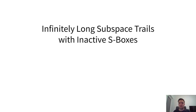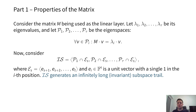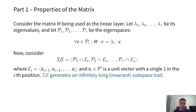What are infinitely long subspace trails with inactive S-boxes? We focus on the properties of the linear layer. If we have a matrix M as the linear layer with some eigenvalues and eigenspaces, then from linear algebra, taking an element of these eigenspaces and multiplying by the matrix gives back the same element times some eigenvalue. If we consider an initial subspace IS, generated by these eigenspaces intersected with the unit vectors at positions where there are no S-boxes, then IS generates an infinitely long invariant subspace trail.